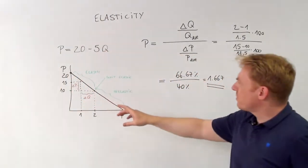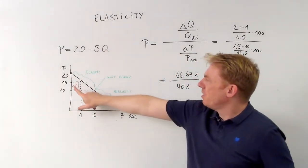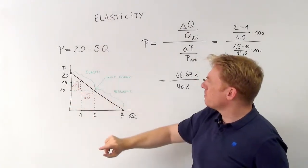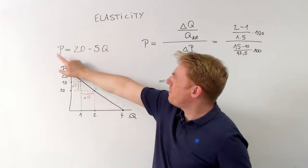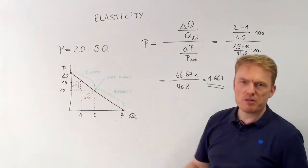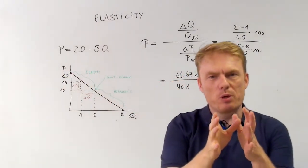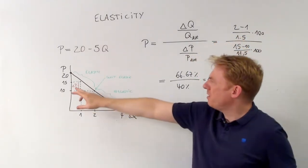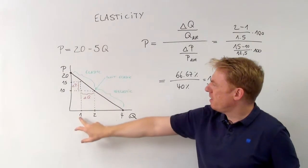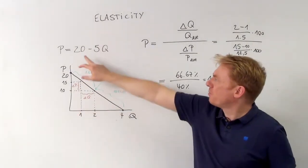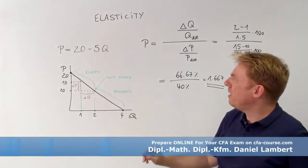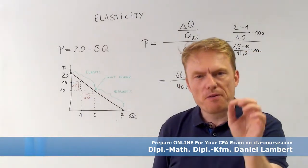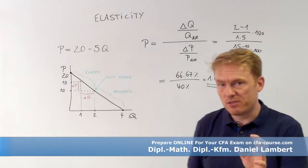Let's consider this point. We have a price of 15: 15 equals 20 minus 5 times q. What is the quantity demanded if we have a price of 15? The answer is 1, because 20 minus 5 times 1 equals 15. So if we want 15 euros or 15 dollars, the quantity demanded equals 1.